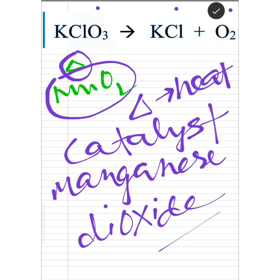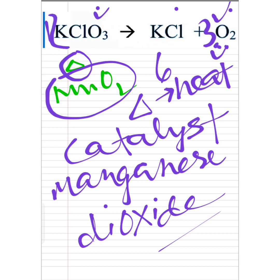Oxygen is 3 in number on the left side and 2 in number on the right side. How do we solve this? The LCM approach: 3 × 2 = 6 and 2 × 3 = 6. So let's put 3 in front of O2 on the right — that gives 3 × 2 = 6 oxygen atoms. Similarly, if we put 2 in front of KClO3 on the left, we get 2 × 3 = 6 oxygen atoms. Both sides now have 6 oxygen atoms — oxygen is balanced.